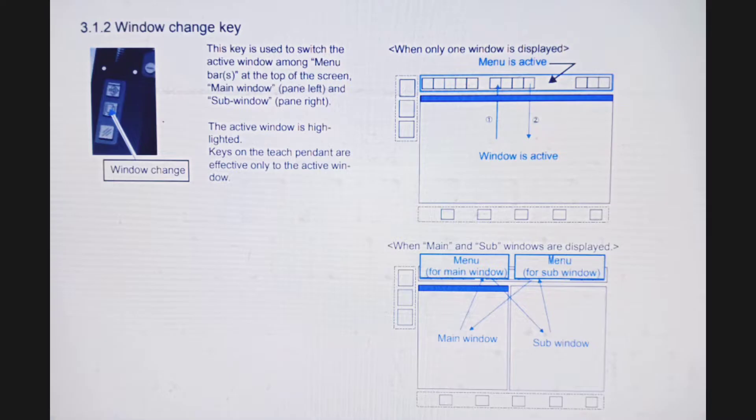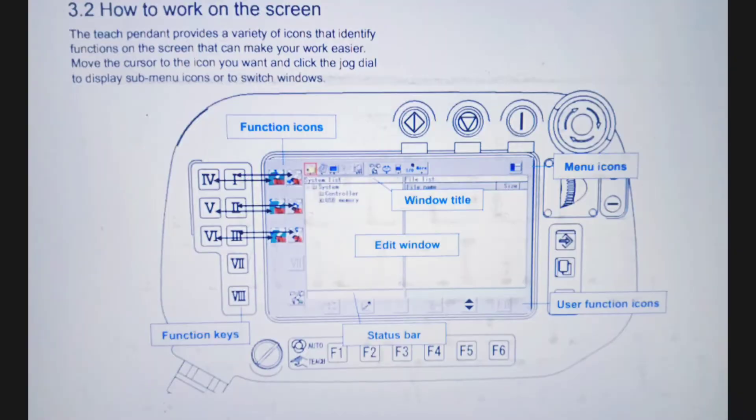How to work on the screen: the teach pendant provides a variety of icons that identify functions on the screen that can make your work easier. Move the cursor to the icon you want and click the jog dial to display sub menu icons or to switch windows.